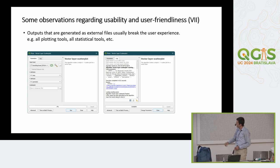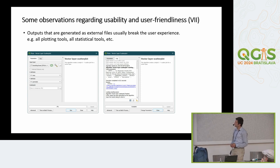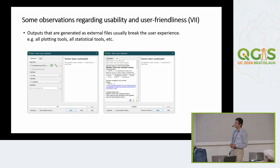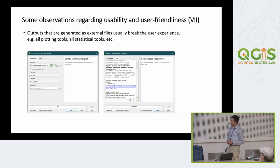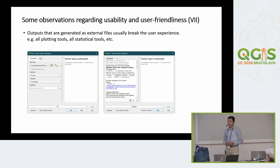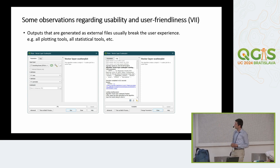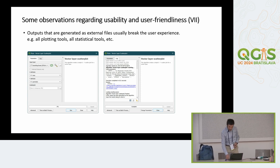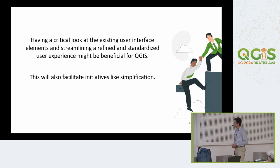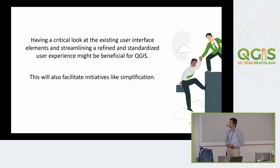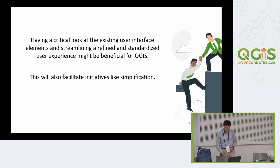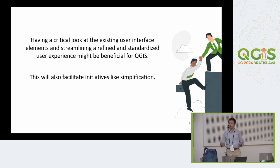The last thing is about external files. There are several tools — like plotting tools or statistical tools — where the output is provided as a link to an external file, with no guarantee that the user can access it, because it depends on the settings of your machine. I think having a critical look at existing user interface elements and streamlining a refined and standardized user experience might be really beneficial for QGIS, and will definitely facilitate simplification initiatives like ours — but probably it will also be useful for everyone in the community.